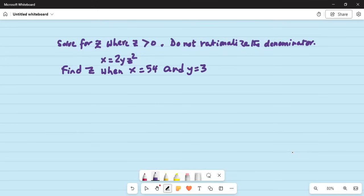So, first, let's write the equation. x is equal to 2yz squared. We have to solve for z. So, we will have to isolate z. That is, remove the coefficient of z squared, which is 2y.